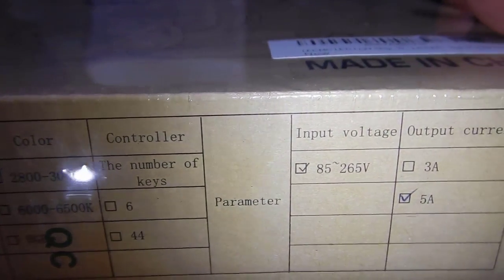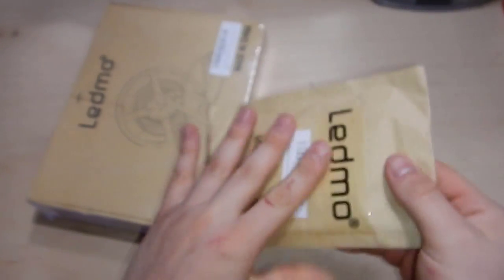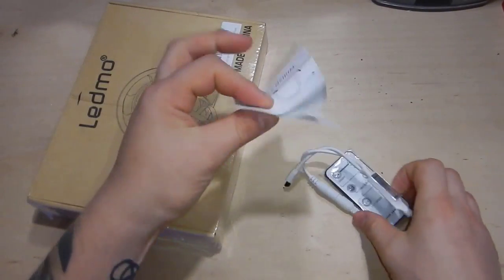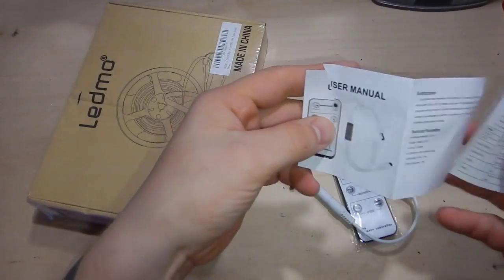So we're going to go ahead and fill it up with acropora, put the chaeto reactor on there, start dosing the trident method and see if it works. Hence the reason why it's a test build. If it doesn't work, if nutrient levels become too high for whatever reason, we'll just stop doing it and try another method.